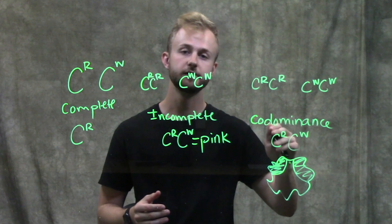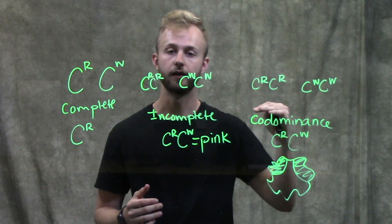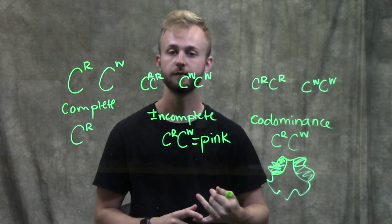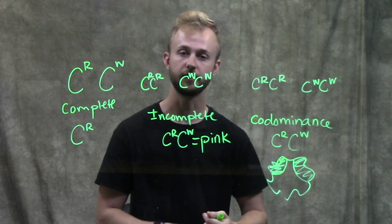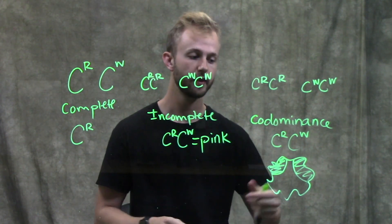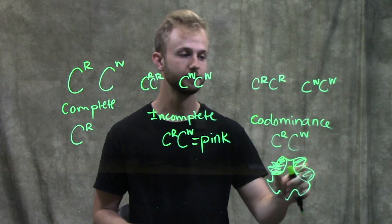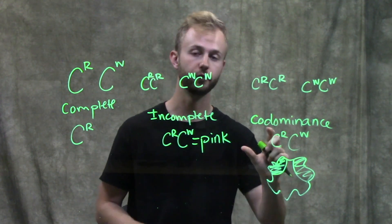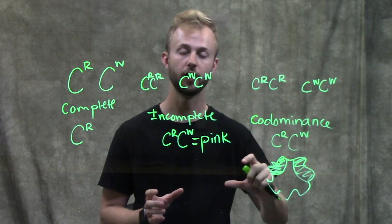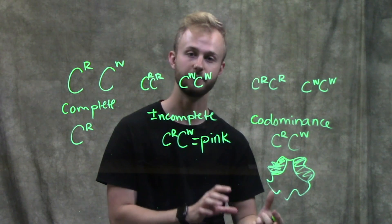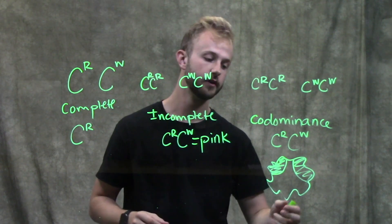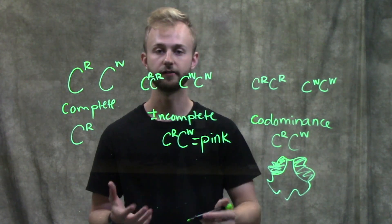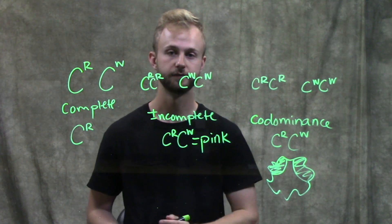Lastly, with co-dominance, both of the alleles are going to be expressed at the same time and independently of one another. So the offspring of these parents would have both red and white on the same flower — different areas would be red and different areas would be white.